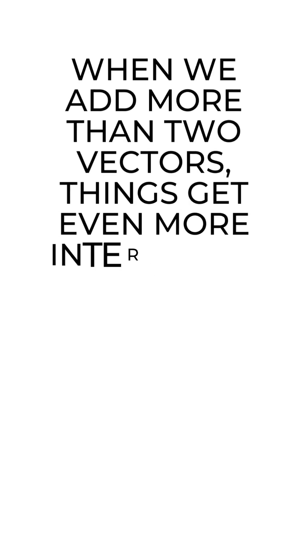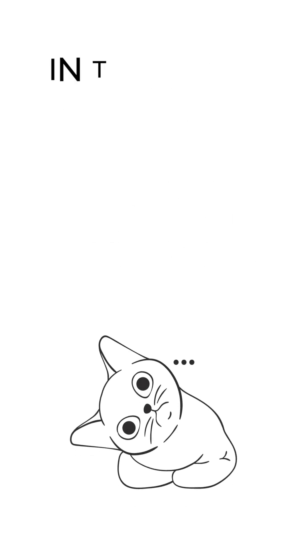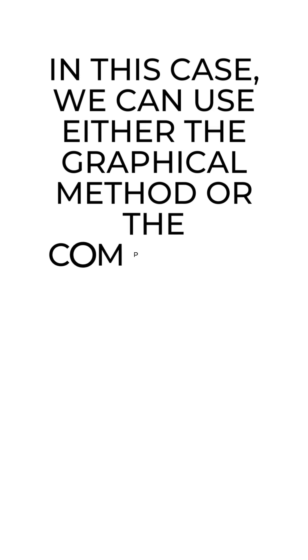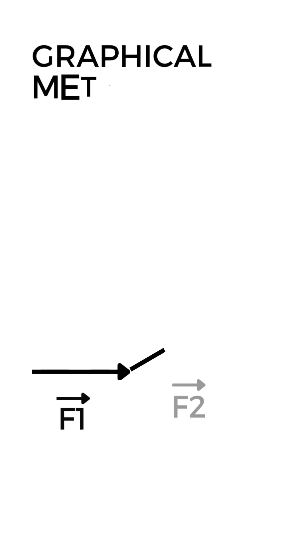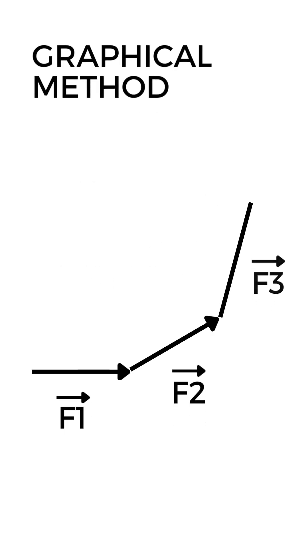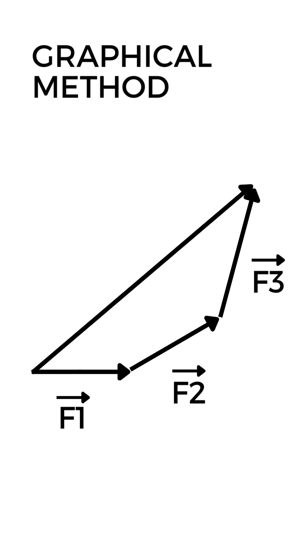But wait, there's more. When we add more than two vectors, things get even more interesting. In this case, we can use either the graphical method or the component method to find the resultant vector. The graphical method involves placing the vectors head to tail and drawing the resultant vector from the tail of the first vector to the head of the last vector.